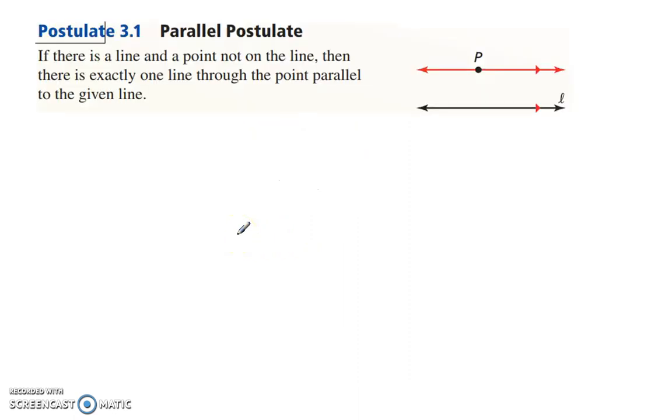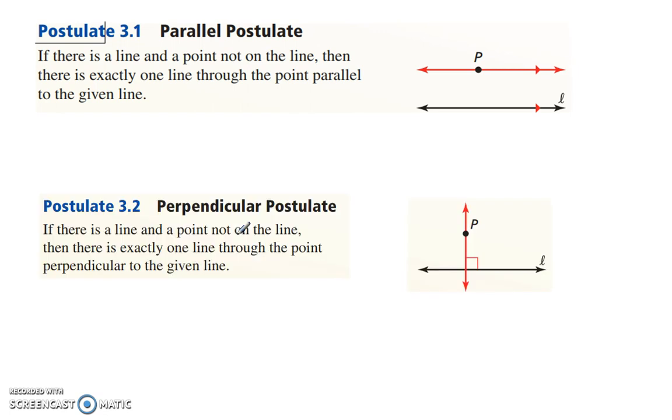Alright, so we have our parallel postulate. If there is a line and a point not on the line, then there is exactly one line through the point parallel to the given line. And our perpendicular postulate is, if there is a line and a point not on the line, there is exactly one line through the point perpendicular to the given line.